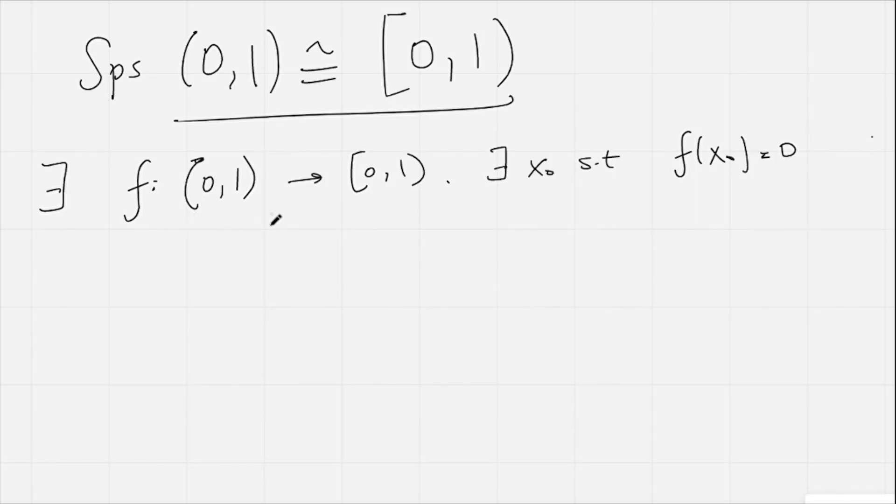Now, we use the fact that (0,1), this interval here, is open. So that means we can choose any point that's less than x₀, but still bigger than 0, and some point that's bigger than x₀, but still less than 1. So choose y and z, such that 0 < y < x₀ < z < 1.